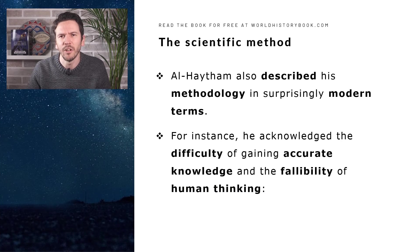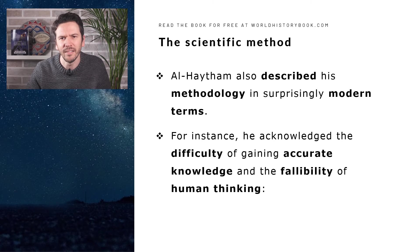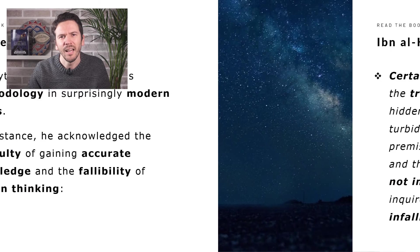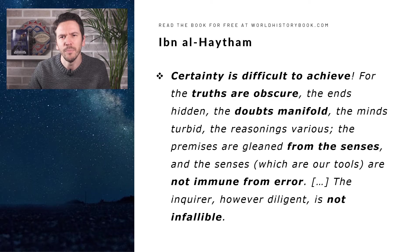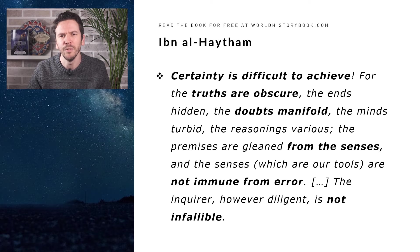Al-Haytham also described his own methodology in surprisingly modern terms. He acknowledged the difficulty of gaining accurate knowledge and the fallibility of human thinking. He said: "Certainty is difficult to achieve, for the truths are obscure, the ends hidden, the doubts manifold, the minds turbid, the reasonings various. The premises are gleaned from the senses, and the senses, which are our only tools, are not immune from error."